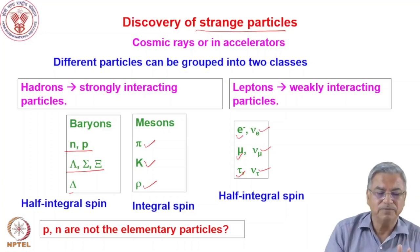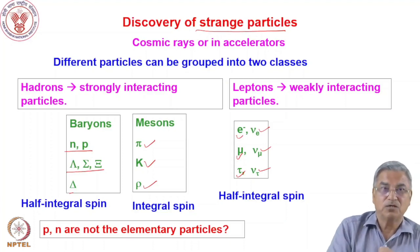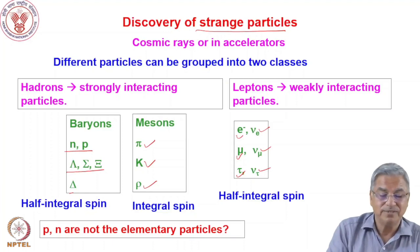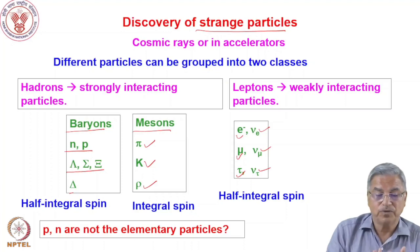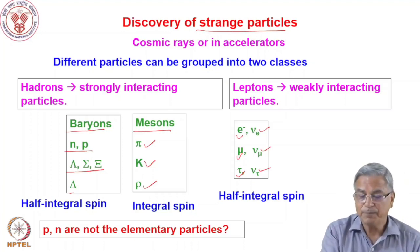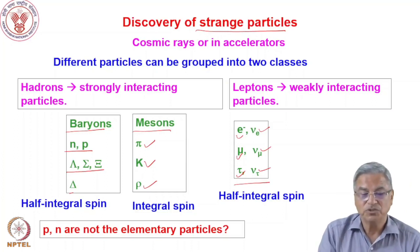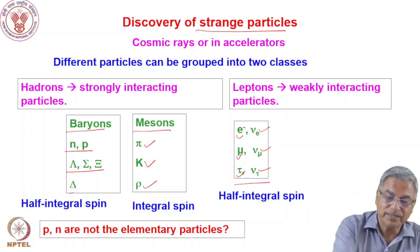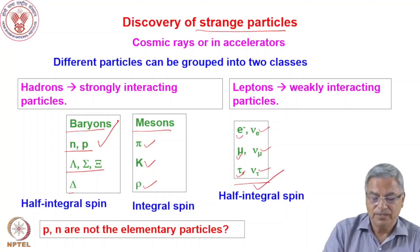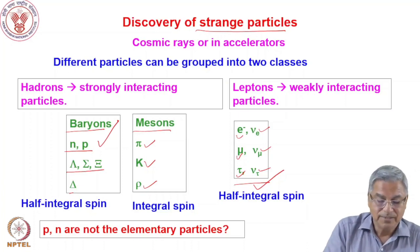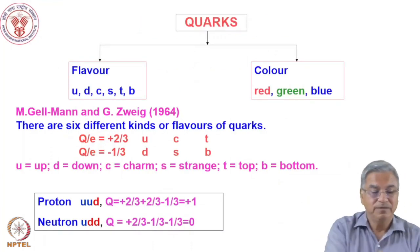There was a classification of these different particles into hadrons — particles which interact by strong interaction. Baryons are the half-integral spin hadrons: neutron, proton, lambda, and delta particles. Mesons are integral spin particles. Leptons are light particles interacting by weak interaction. This is how scientists started feeling that proton and neutron may not be the fundamental building blocks of matter. In 1964, after a good number of discoveries of strange particles, Murray Gell-Mann and Zweig predicted — in one of those cases where theory precedes experimental evidence — that protons, neutrons, and different baryons are made of quarks.